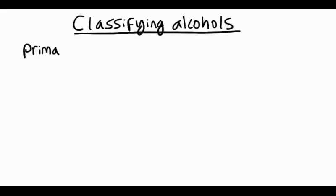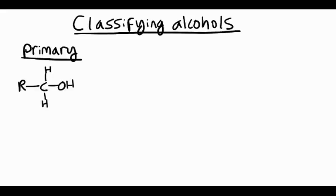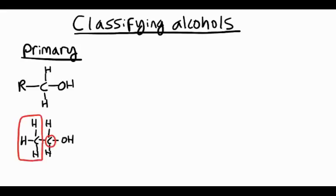Let's start with primary alcohols. We have to look at the carbon that the OH group is attached to. If it's got one R group or one alkyl group attached to it, it's a primary alcohol. For example, ethanol is a primary alcohol because the carbon that the OH group is attached to also has a CH3 group attached to it and two hydrogens, and that's what makes it a primary alcohol.